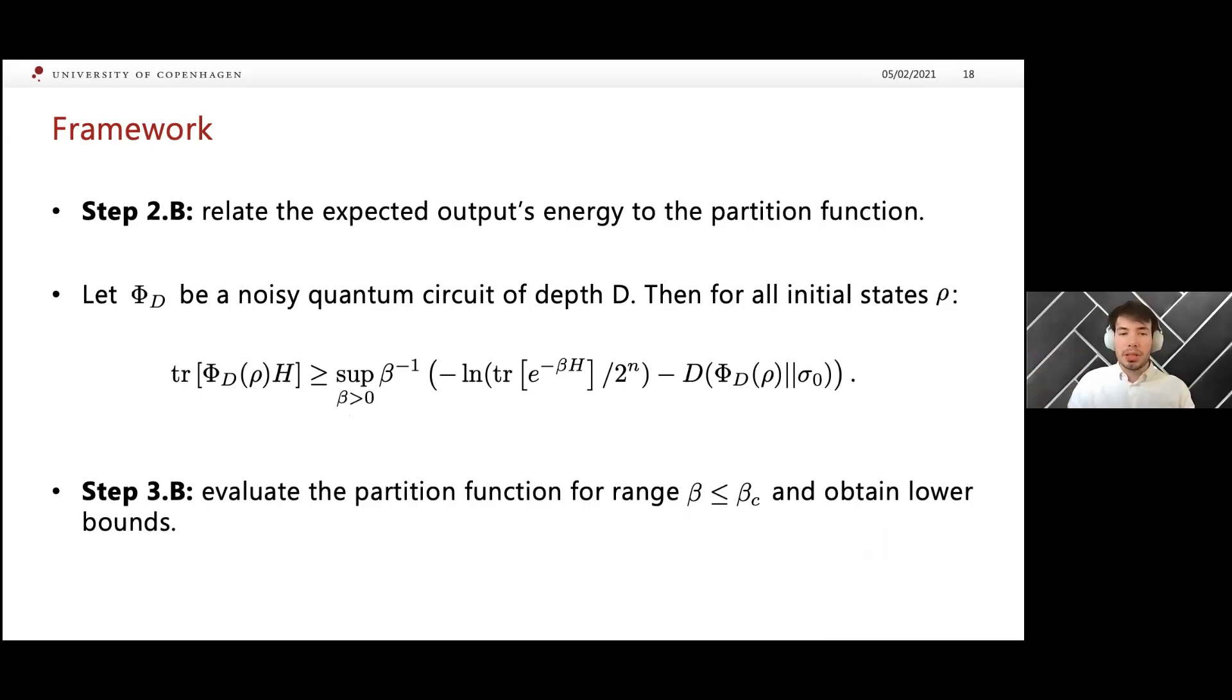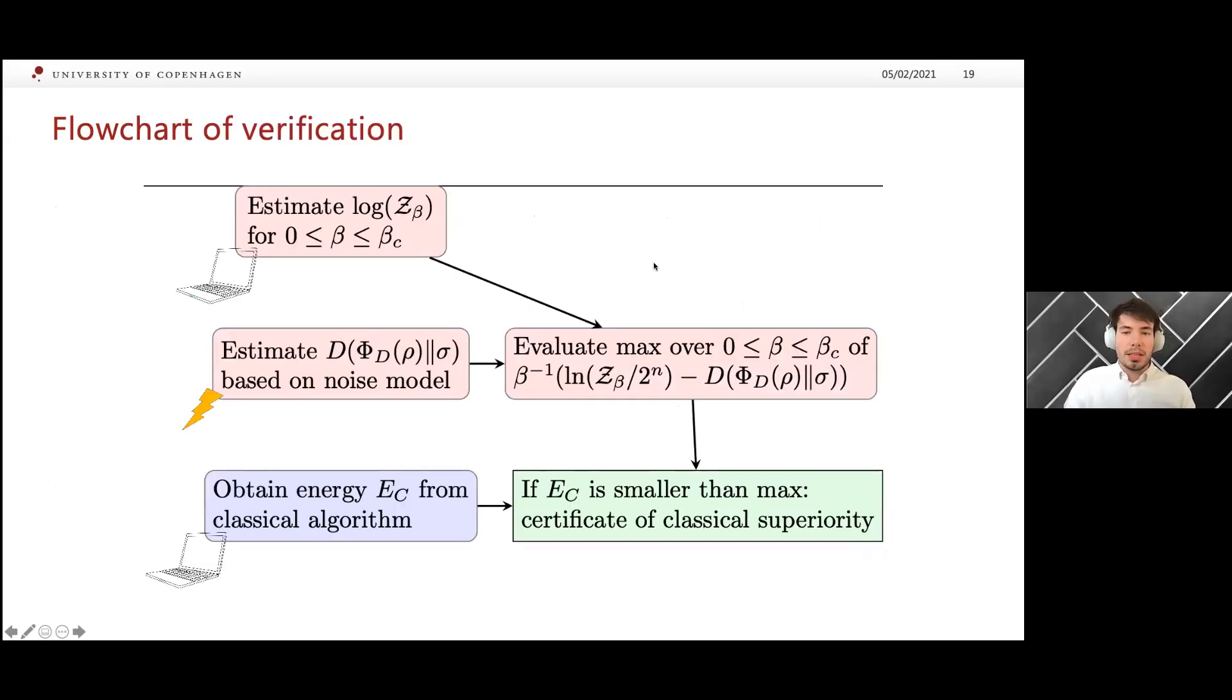For many models of interest, this is the case. For instance, in the Ising model I had before, for the same range of inverse temperatures where you can sample from that state, you can also easily approximately compute this log partition function. You can then just plug in your upper bound on this relative entropy and obtain a lower bound on the expected value of this energy. This is more or less how you would use this technique. You use your classical computer to estimate the log partition function for some range of betas. In practice, you could even go as far as your classical resources allow you to. But for most problems, you have the promise that for at least a non-trivial range, you can do this efficiently.